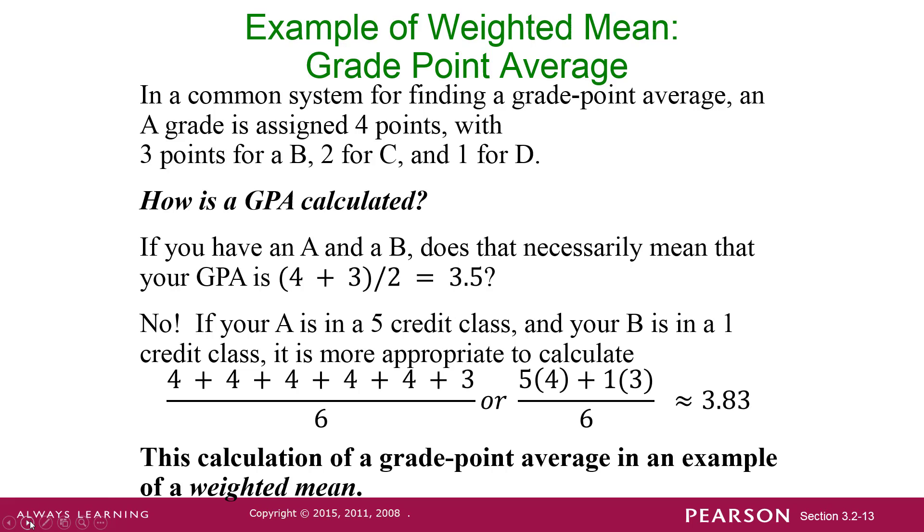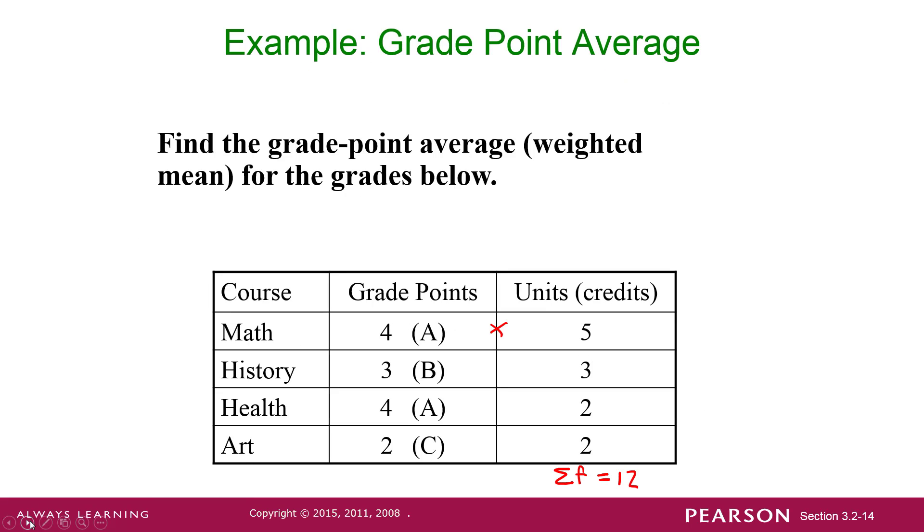So we did that last time. We got a weighted mean. To make it easier, you can put it into a chart. This is basically a frequency distribution where the credits are telling you the weight of the grade, but also you could think of it as the frequency. When you do that, you have the data values, you have your frequencies, and you just multiply across.